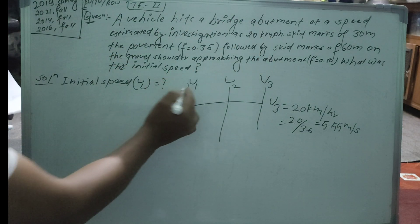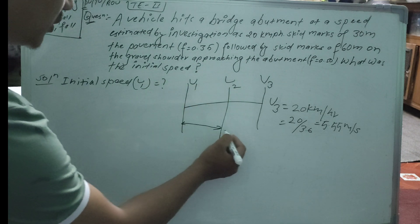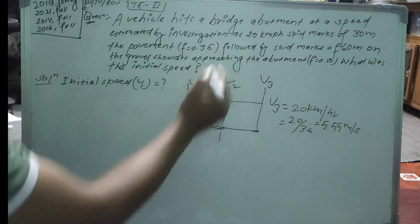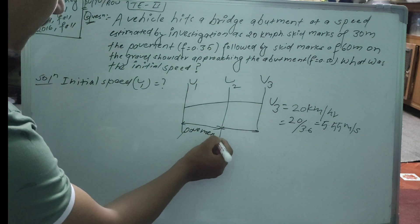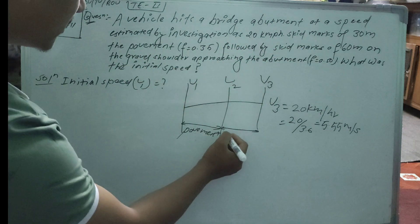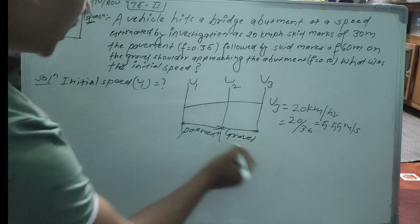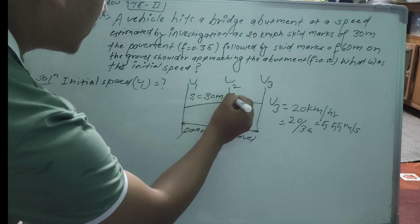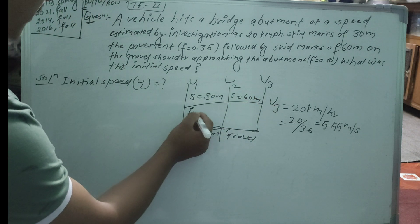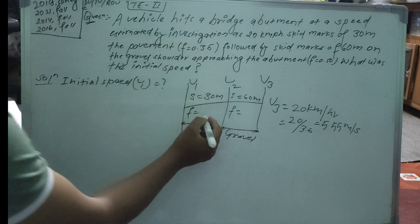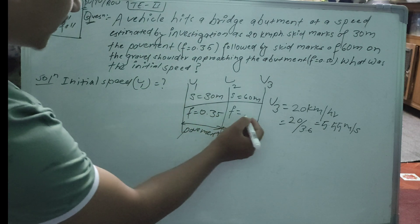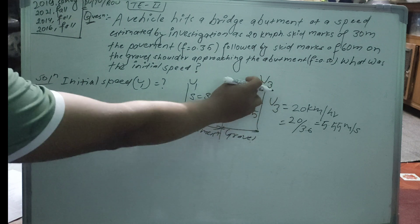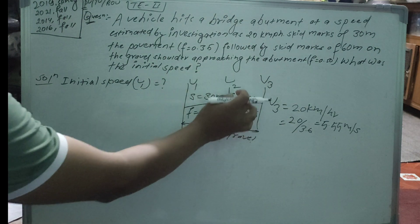The skid mark from position 1 to 2 is 30 meters on the pavement. Then there is another skid mark of 60 meters on the gravel shoulder. The friction value on the pavement is F = 0.35 and on the shoulder approaching the abutment is F = 0.5.